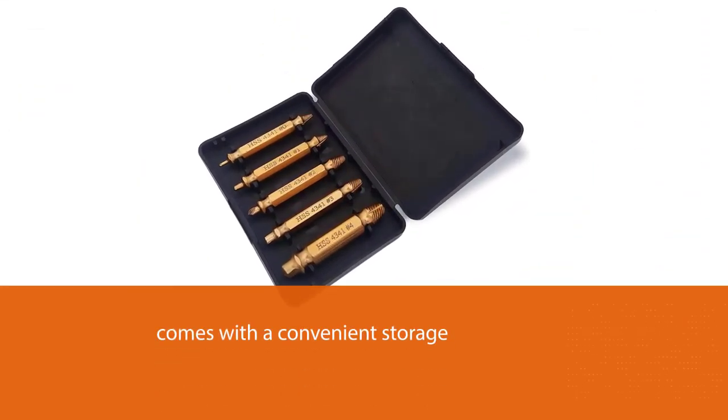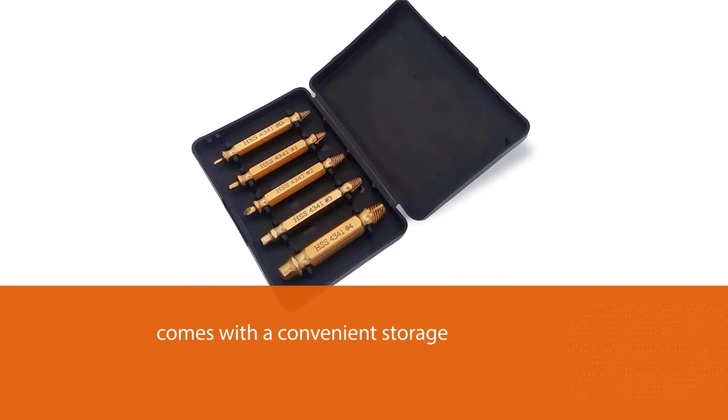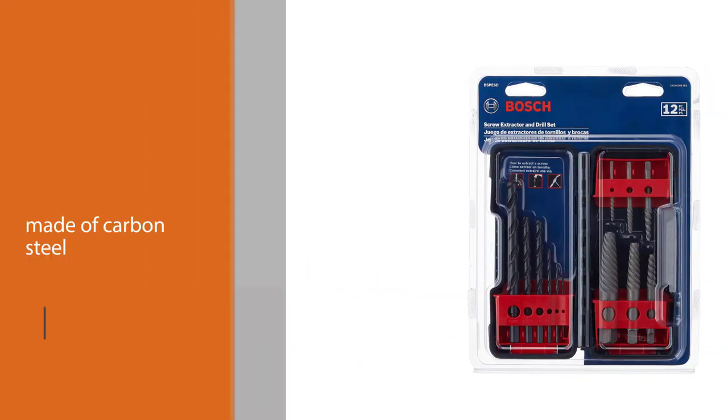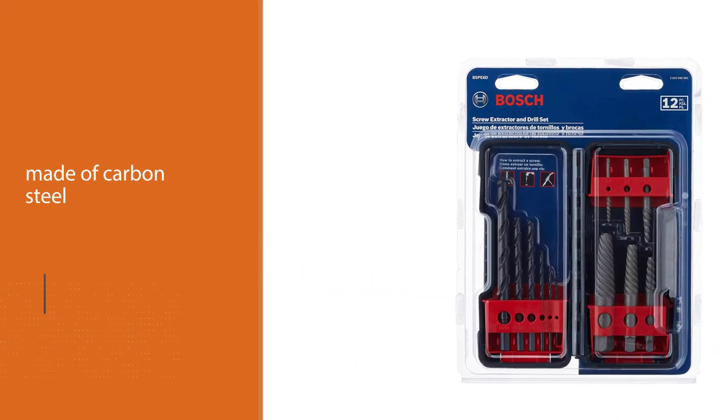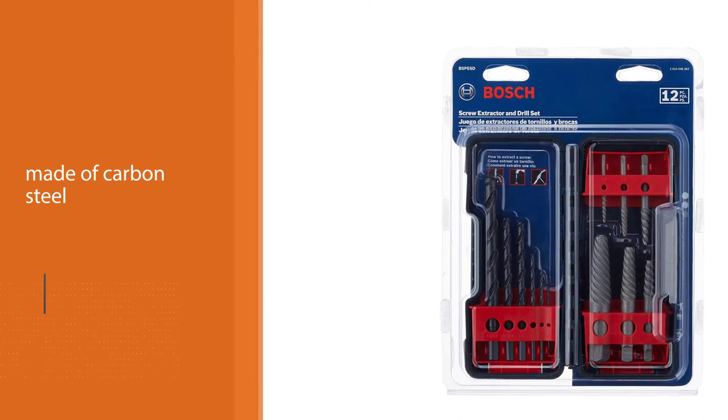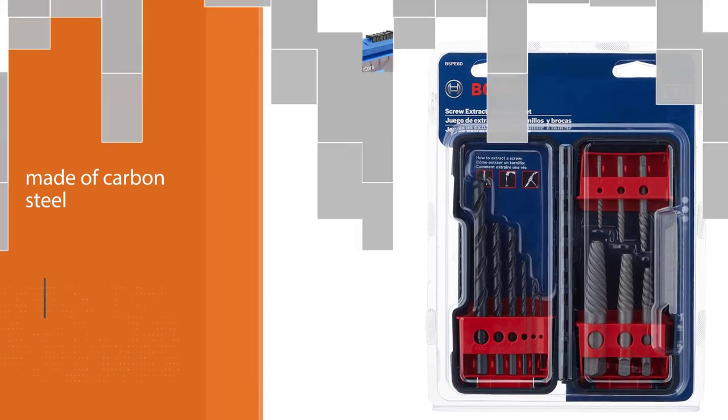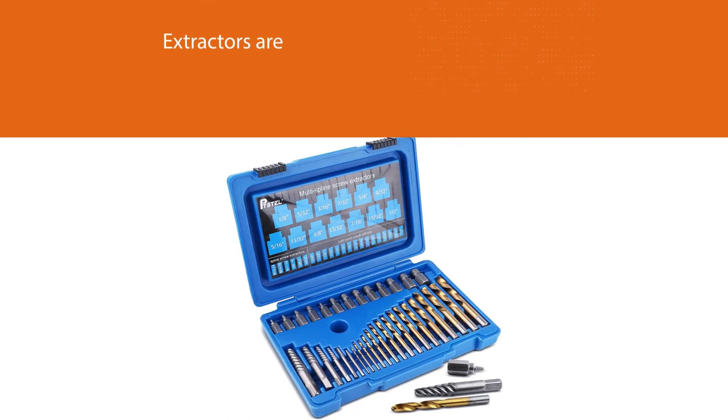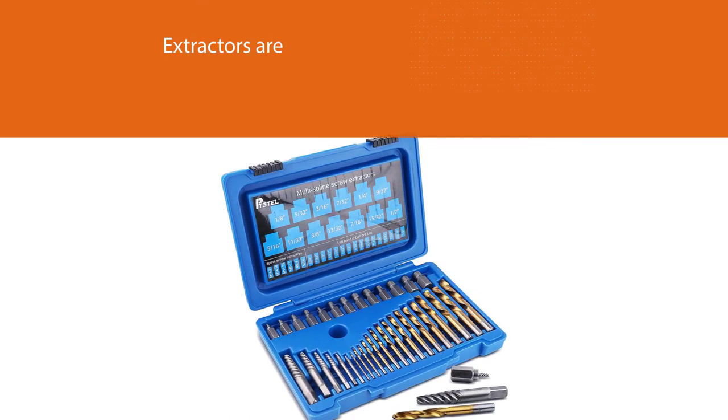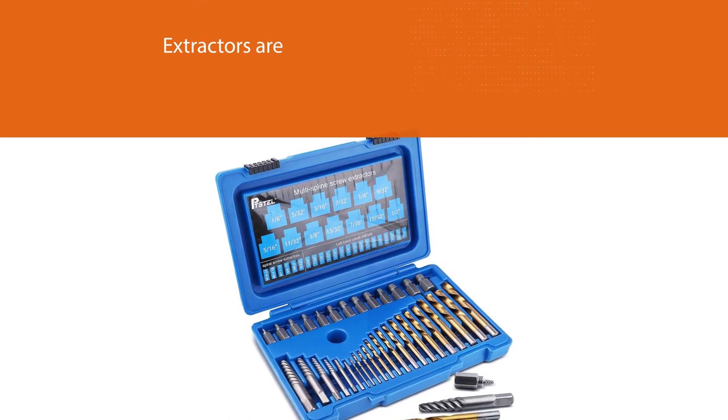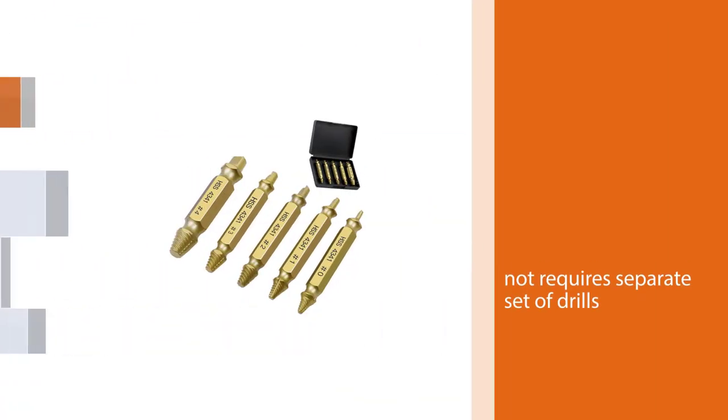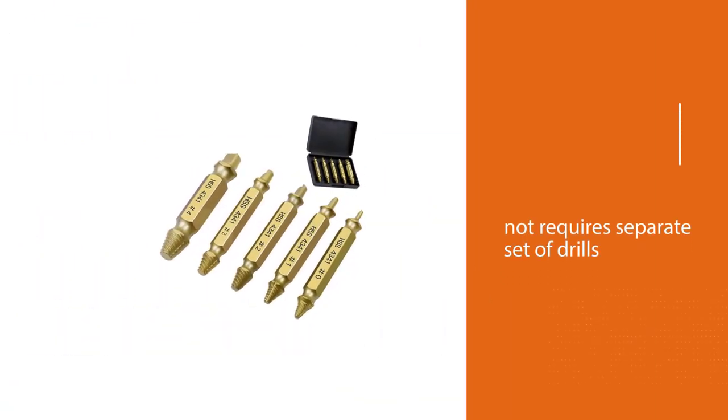The four pieces can extract screw sizes number four to twenty-four, as well as three-sixteenths (five millimeters), one-quarter (six millimeters), five-sixteenths (eight millimeters), and three-eighths (ten millimeters) bolts. They are reversible with a drill bit on one side and an extractor bit on the other. The product is convenient to use as it does not require a separate set of drills.